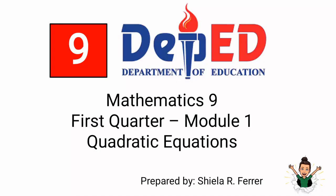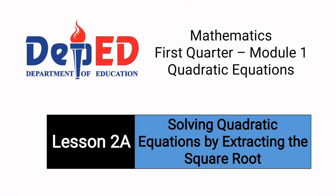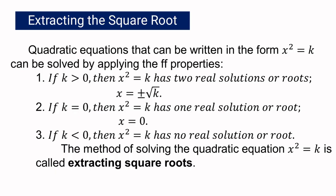Let us continue discussing about quadratic equations. Today I will be discussing how to solve quadratic equations by extracting the square root. Quadratic equations that can be written in the form x squared equals k can be solved by the following properties.